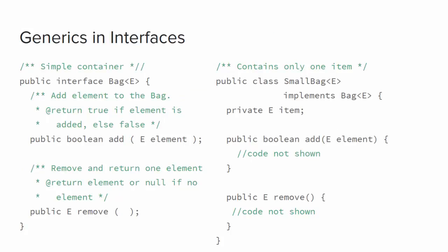This slightly more complicated example shows that generics can be part of an interface that is then carried over into a class that implements that interface. The bag interface declares a generic type E that is taken as an argument in the add method and is the return type of its remove method. When class SmallBag implements Bag, it has to conform to the interface and use the required generic type as part of its methods also.